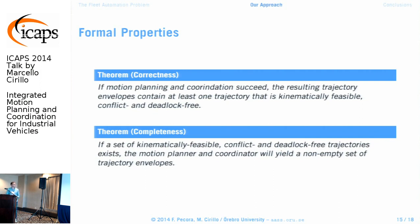We also have completeness: under the operational assumptions detailed in the paper, if a set of kinematically feasible, conflict- and deadlock-free trajectories exists, then the motion planner and coordinator will yield a non-empty set of trajectory envelopes. In other words, if a solution exists, we will find it.